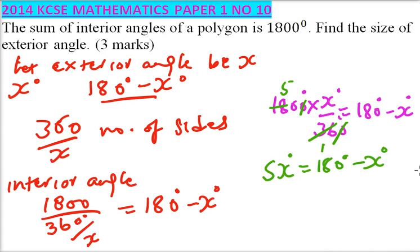So bring X to the other side, we have 6X equals 180 degrees. X equals, you divide both sides by 6, that gives 30 degrees.